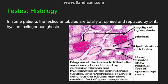Regarding the histology of the testis: the seminiferous tubules are atrophied. A few seminiferous tubules remain normal, but many get atrophied and are replaced by hyaline, ghost-like tubules. There is hyalinization of the tubules and fibrosis. One characteristic finding is Leydig cell hyperplasia — due to increased FSH and LH, there is an increase in Leydig cells.